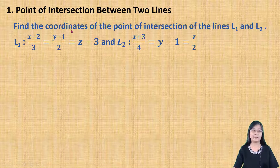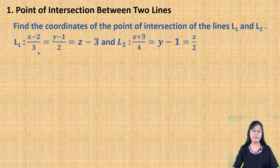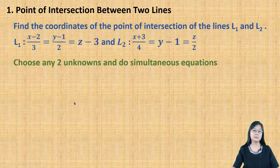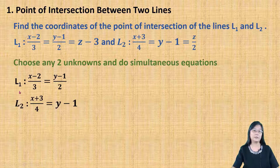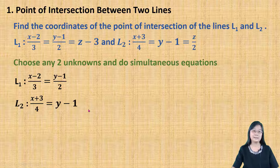Now let's look at another example: find the coordinates of the point of intersection of lines L1 and L2. In this question, the vector equation of the line is given in Cartesian form. The Cartesian form of vector equation of a straight line consists of 3 unknowns. So, in this case, we are going to choose any 2 unknowns and do simultaneous equations. Here, I choose the unknowns X and Y. So, from line L1, term X equals term Y, and I ignore term Z. And for line L2, term X equals term Y, and I ignore term Z.